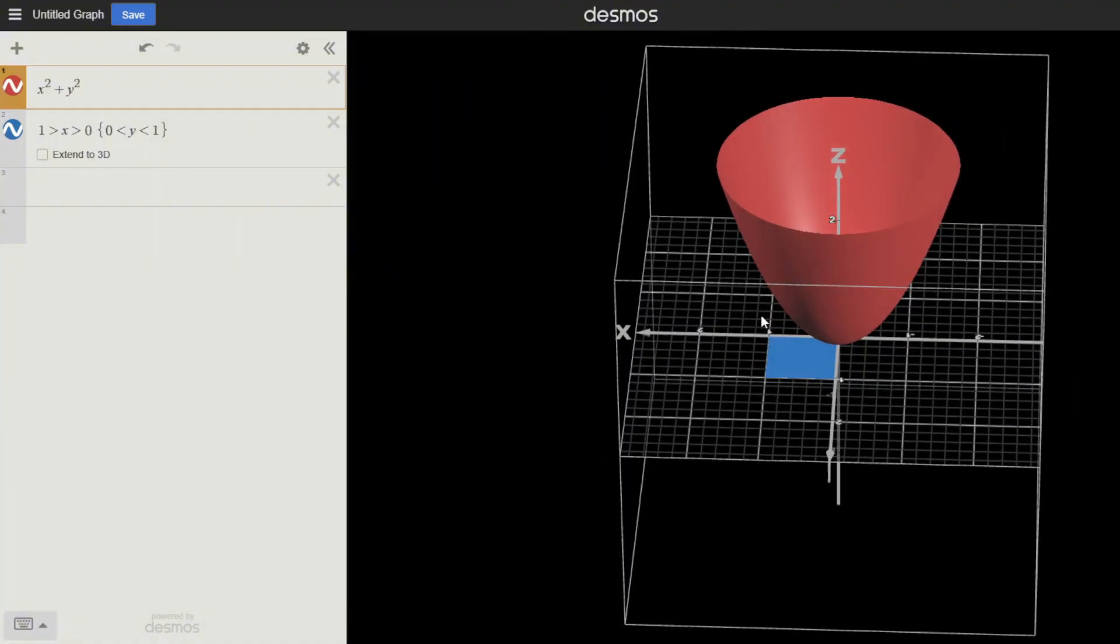So recap: a double integral solves for volume and you're integrating upon area. In traditional Calculus 1, you integrate upon the x-axis, like a line, and you get area.